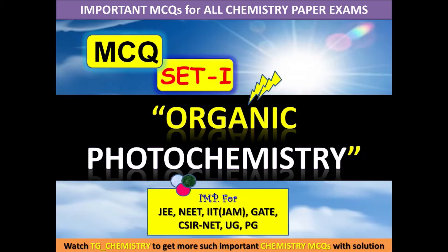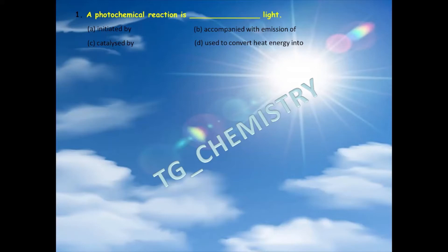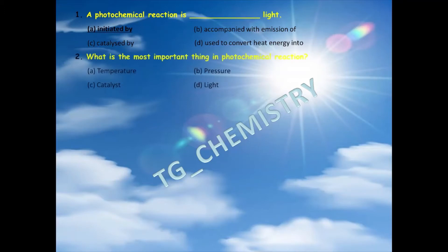Let's look at the multiple choice questions. First, a fill-in-the-blank: a photochemical reaction is ___. Option A: initiated by light. Option B: accompanied with the emission of light. Option C: catalyzed by light. Option D: used to convert heat energy into light. The right answer is option A — initiated by light.